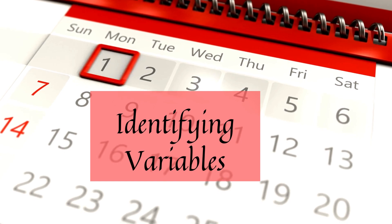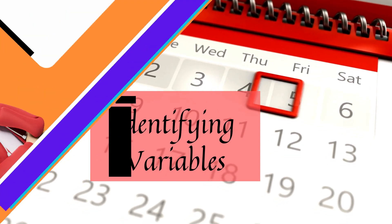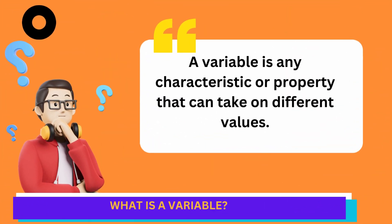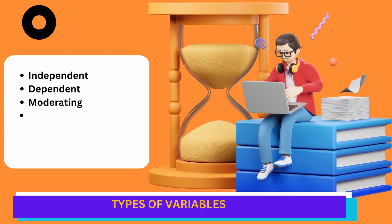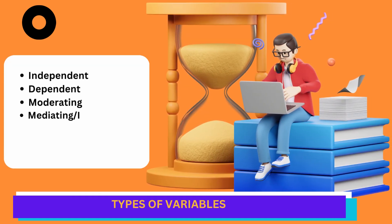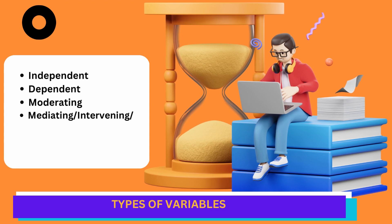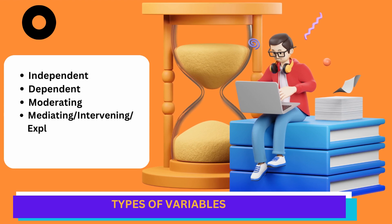Let's start with variables. A variable is any characteristic or property that can take on different values or categories. There are several types of variables including independent, dependent, moderating, mediating, and extraneous or control variables.